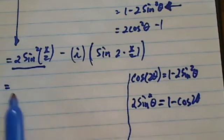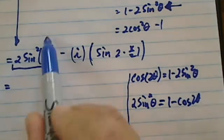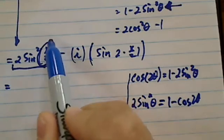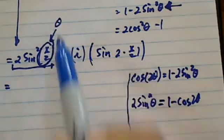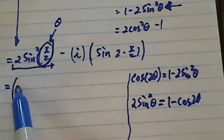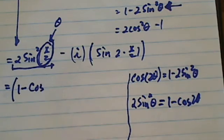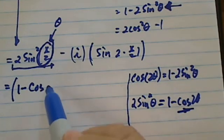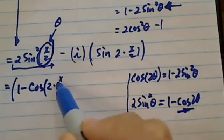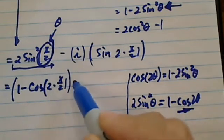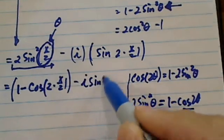Okay, so here, this chunk, this chunk is my theta. So this chunk is really equal to 1 minus cosine of 2 theta over here, so cosine of 2 times x over 2. Okay, minus i of sine of x.